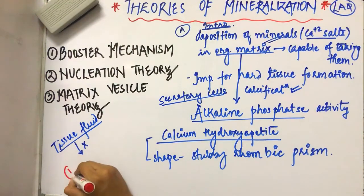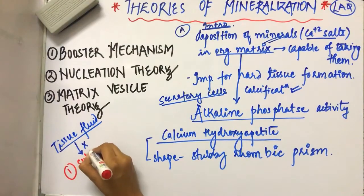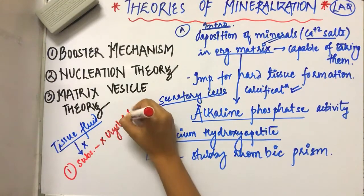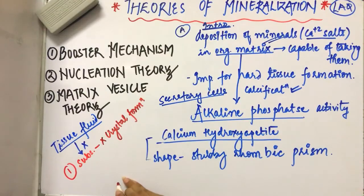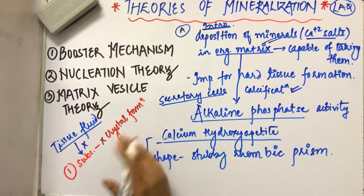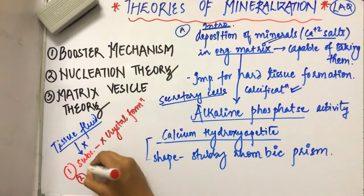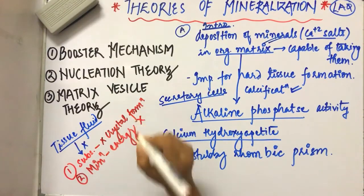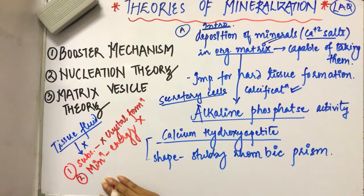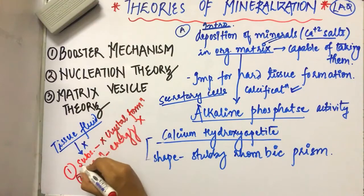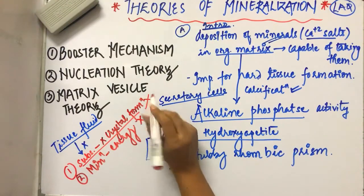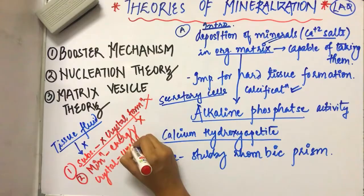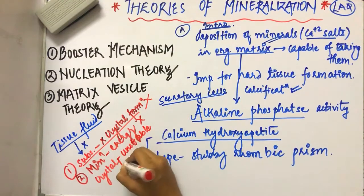First, there are substances which are present in the tissue fluid which inhibit crystal formation. So tissue fluid has such substances present which inhibit crystal formation. Next, the mineralization procedure needs energy, which in sufficient amount is not present in tissue fluid. After this, if these substances inhibit crystal formation, then the crystals that form are unstable and in insufficient amount.